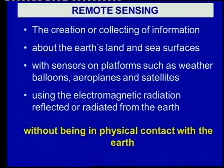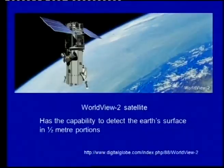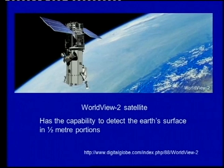The most important characteristic of remote sensing is that it operates without being in physical contact with the Earth. An example here is this picture with the globe or the Earth in the background and a satellite up in the sky. This particular satellite is the WorldView2 satellite, which has the capability to detect the Earth's surface in half-meter portions — a concept I will get to just now.